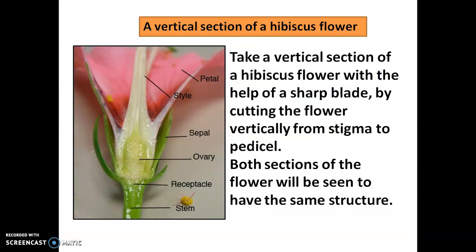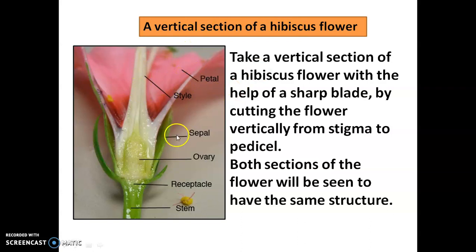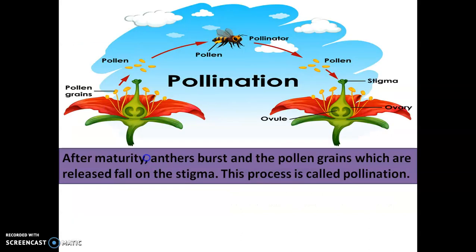If we take a vertical section of hibiscus flower — vertical means cutting upside down — take a vertical section with the help of a sharp blade by cutting the flower vertically from stigma to pedicel. Both sections of the flower will have the same structure. If we divide it into two parts, each will have petals, style, sepal, ovary, then the receptacle and the stem. So if you actually cut the flower and observe, you can see a very similar structure like this.